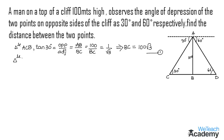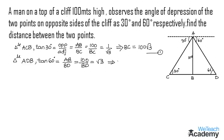Now let us consider triangle ABD. From triangle ABD, tan 60 degrees equals the opposite side AB by the adjacent side BD. So we get AB by BD equal to 100 by BD, which is equated to the value of tan 60, which is √3. Simplifying, BD equals 100 by √3. Let us name this equation 2.